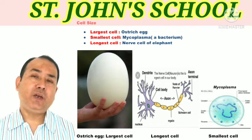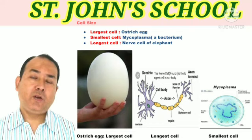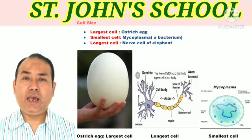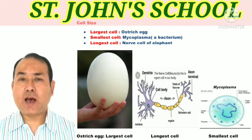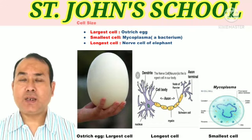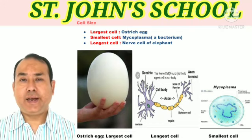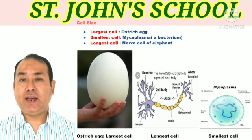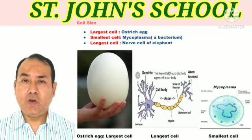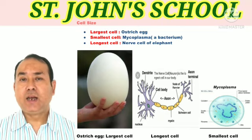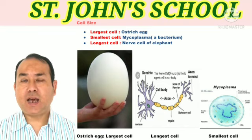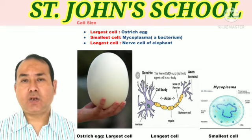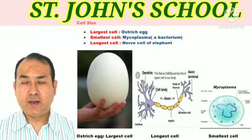From this topic, you need to remember: Mycoplasma is the smallest cell, the nerve cell of elephant is the longest cell, and the ostrich egg is the largest cell.